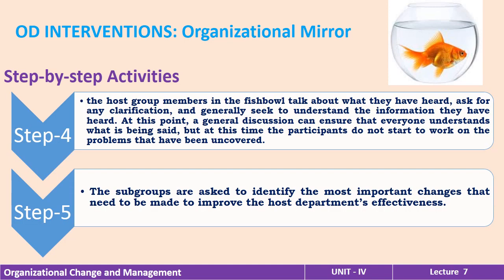In step four, the host group members in the fish bowl talk about what they have heard, ask for any clarification, and generally seek to understand the information they have heard. At this point, a general discussion can ensure that everyone understands what is being said, but at this time the participants do not start to work on the problems that have been uncovered.